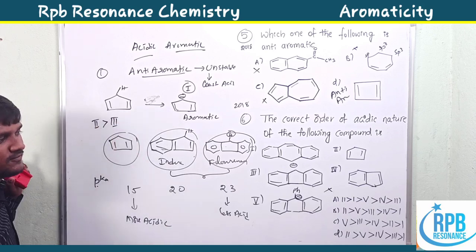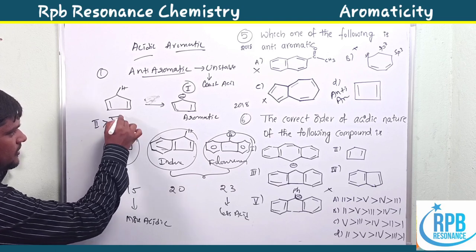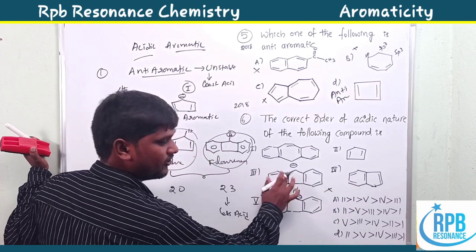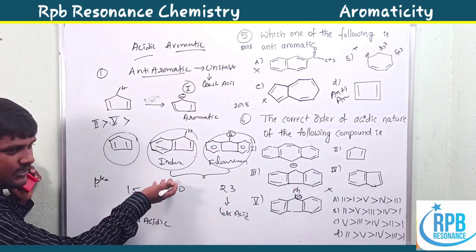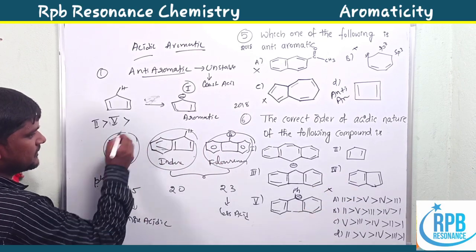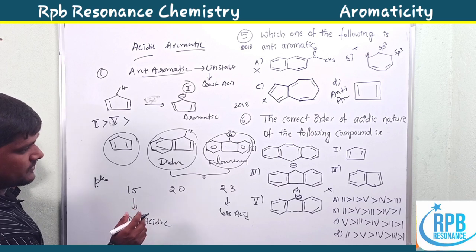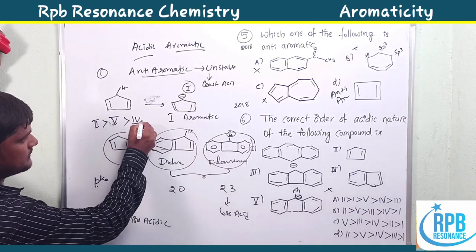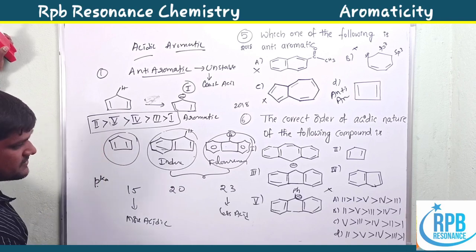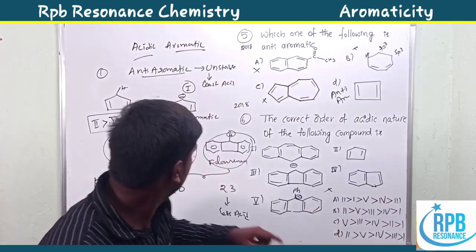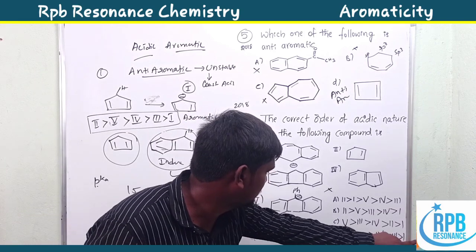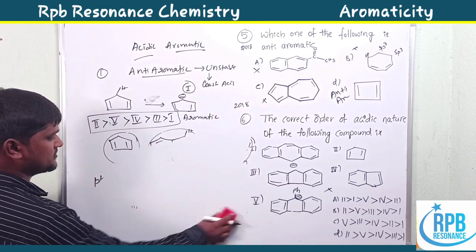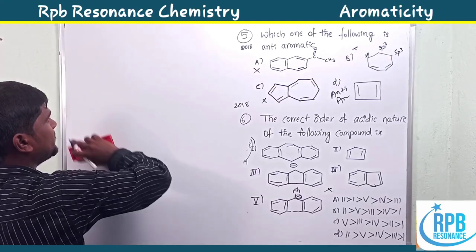Compound five produces a benzyl carbanion upon deprotonation, which is highly stable — making it more acidic than indene and fluorene but less than cyclopentadiene. The final acidic order is: compound 2 > compound 5 > compound 4 > compound 3 > compound 1. Option D is correct. This completes the explanation of aromaticity-related questions from JEE 2018.